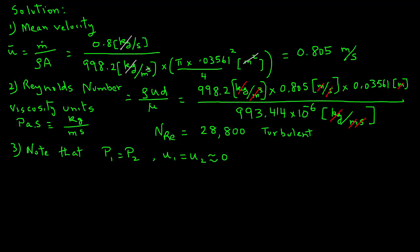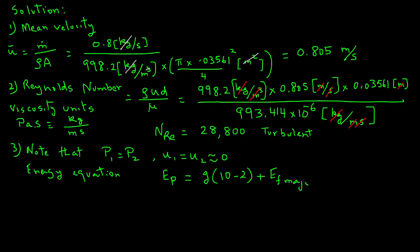Referring to the previous tutorial on pumping, several terms cancel out because pressure 1 equals pressure 2 and velocities are zero. So E_P equals g times the change in elevation (10 minus 2 meters), plus the energy associated with friction from major losses and minor losses. The next steps will determine these frictional energy values.